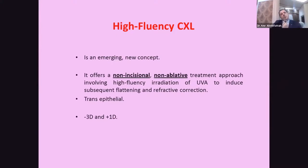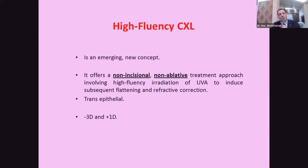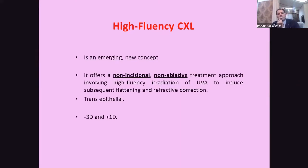A new technology is called high fluence cross-linking. It is an emerging concept offering a non-incisional, non-ablative treatment involving high fluence ultraviolet-A irradiation to induce subsequent corneal flattening and refractive correction. This is a trans-epithelial maneuver, and up to now it is assumed to correct from minus 3 diopters to plus 1 diopter, and it is expected to be promising in the future.